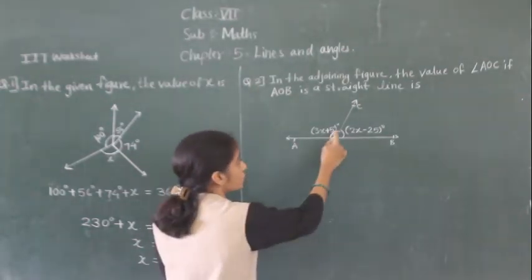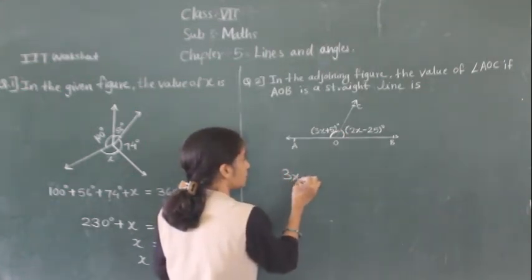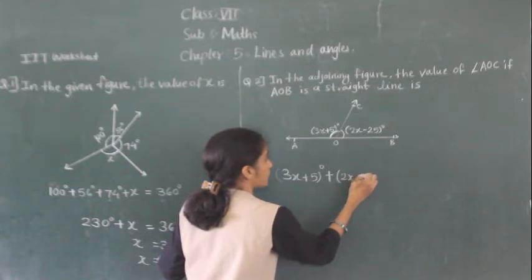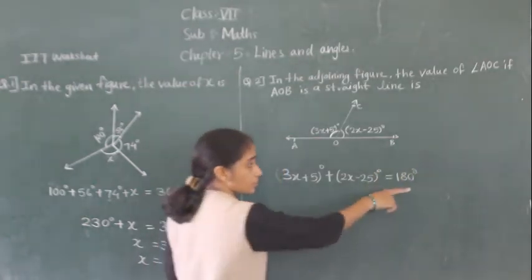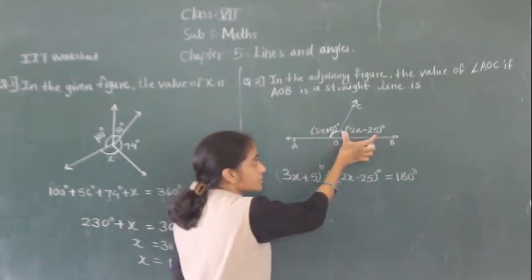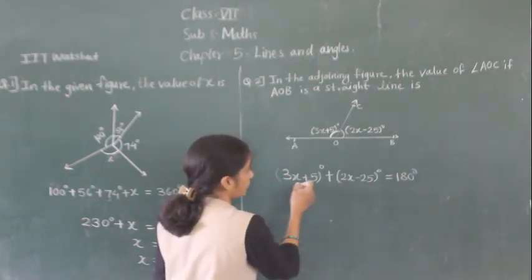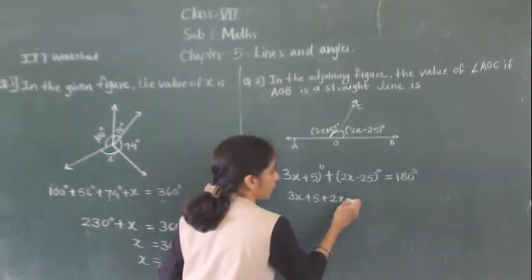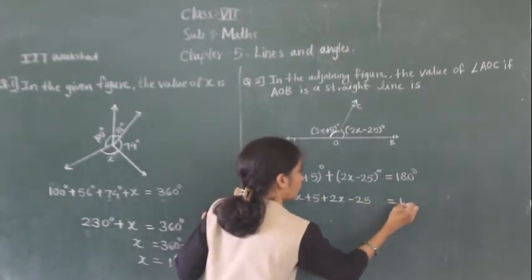Since it is a linear pair, the sum is equal to 180 degrees. So this angle plus this angle is equal to 180 degrees. So: 3x plus 5 degrees, plus 2x minus 25 degrees, is equal to 180 degrees — because they form a linear pair. This angle plus this angle is equal to 180 degrees.